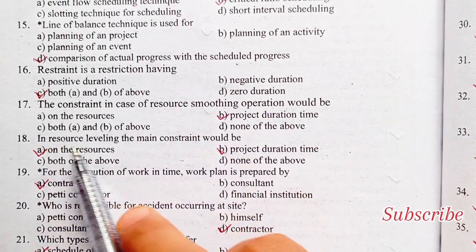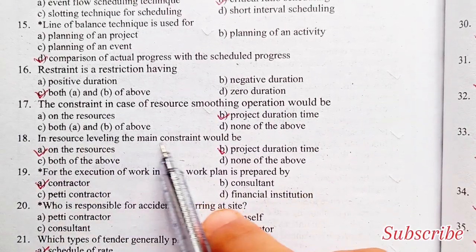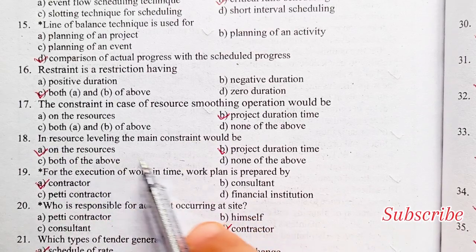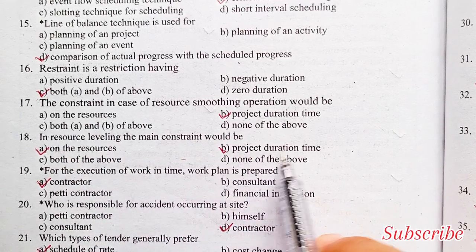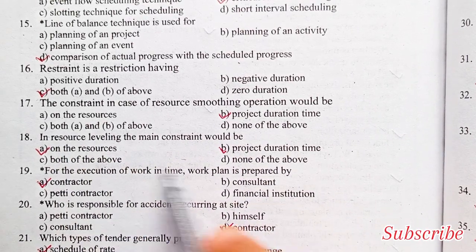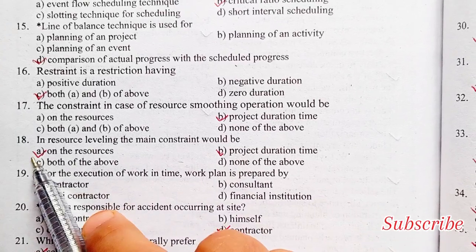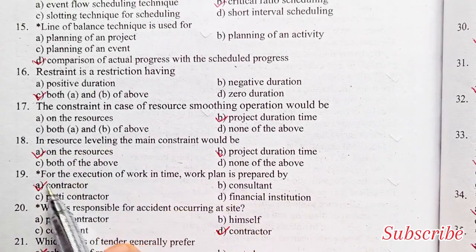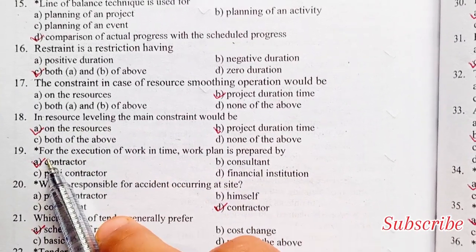In resource leveling, the main constraint will be on: the resource, project duration time, both of the above, or none. Option A is the right answer — on the resource.